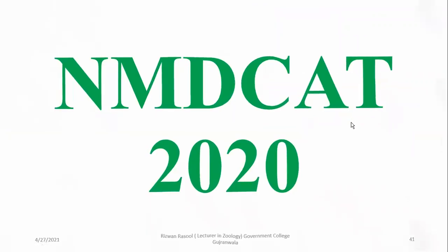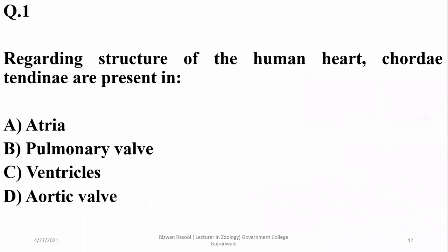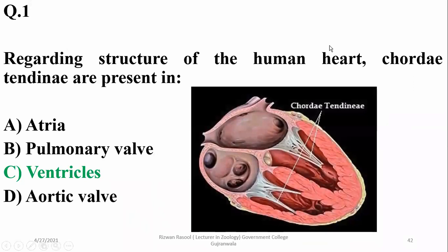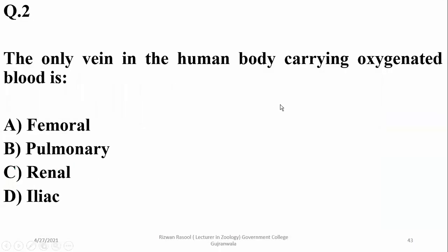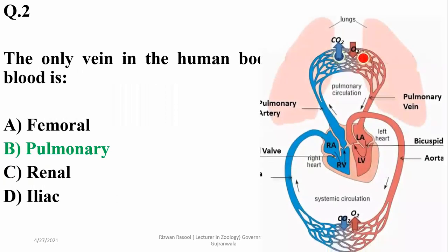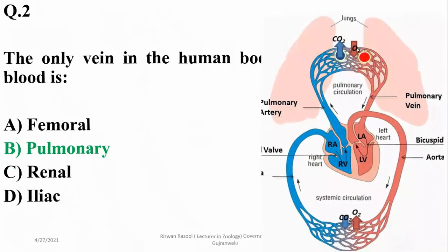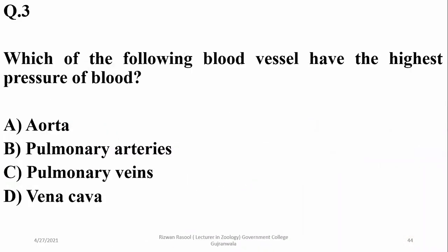The NB Care 2020 paper also includes questions related to the structure of the human heart. Chordae tendineae are found in the ventricles — they are fibrous structures responsible for the attachment of bicuspid and tricuspid valves to the walls of the ventricle through papillary muscles. The only vein in the adult human body carrying oxygenated blood is the pulmonary vein; other veins carrying oxygenated blood are found only at embryonic stages — the umbilical vein.